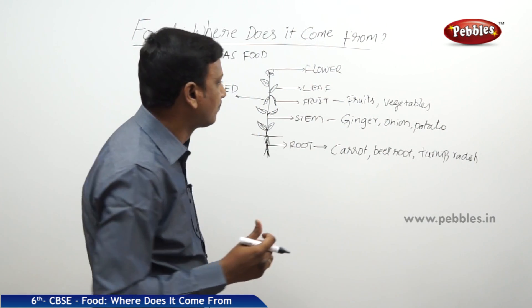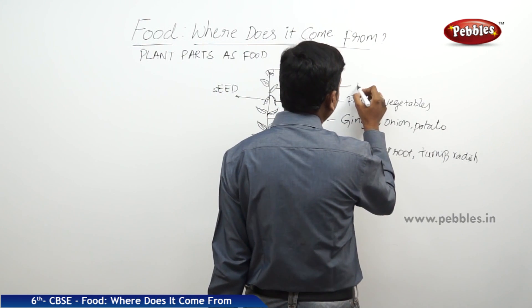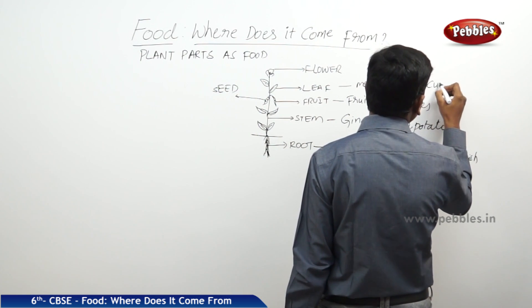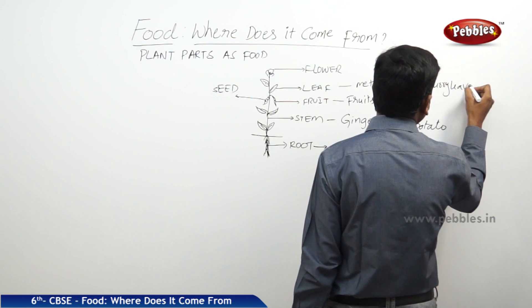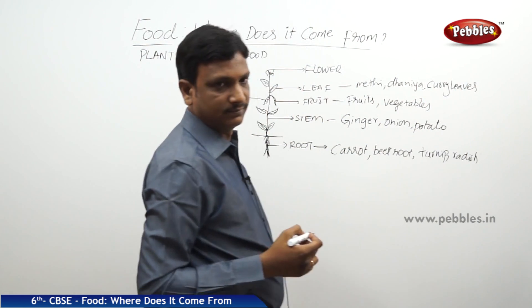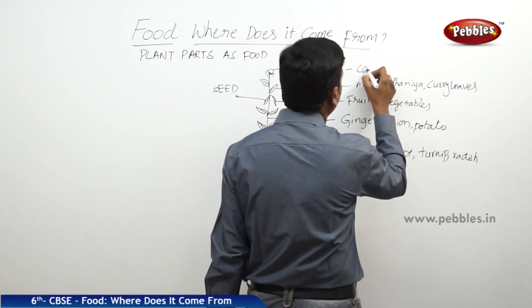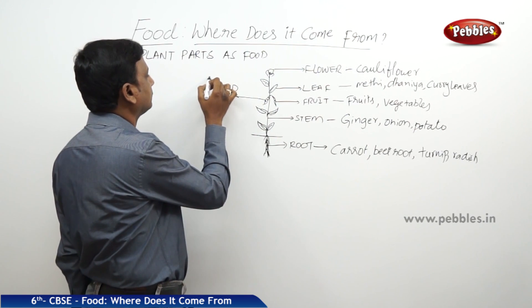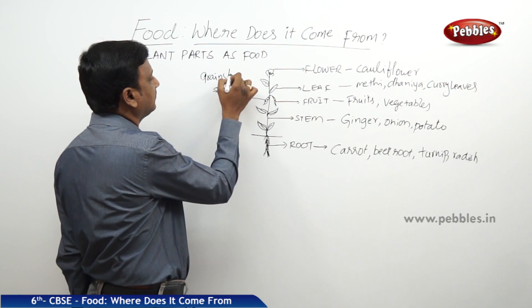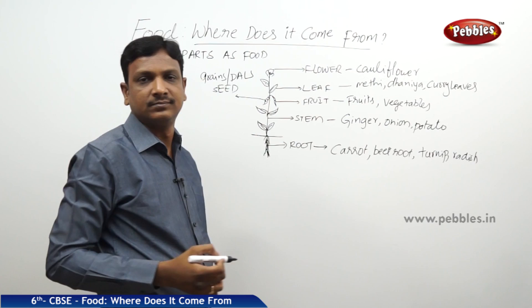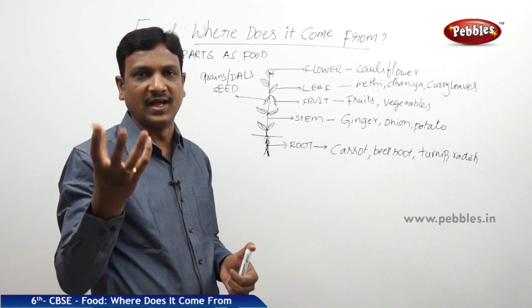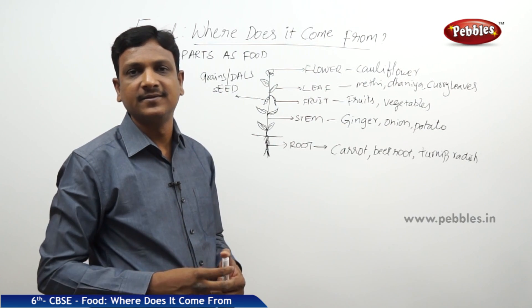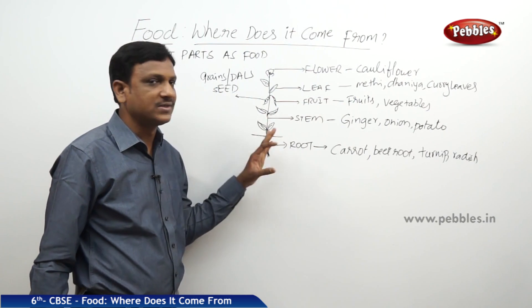Leaves — leafy vegetables like methi, dhania, and curry leaves. Flowers — cauliflower is an example. Seeds — all the grains are seeds; dals are all seeds. Coconut — it is a seed of the coconut tree; you use the water and the grated coconut in dishes. So all the parts of the plant are used as food.